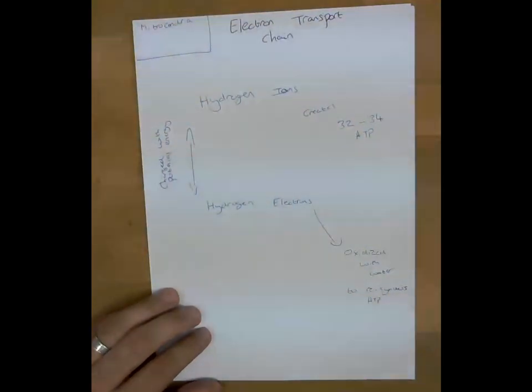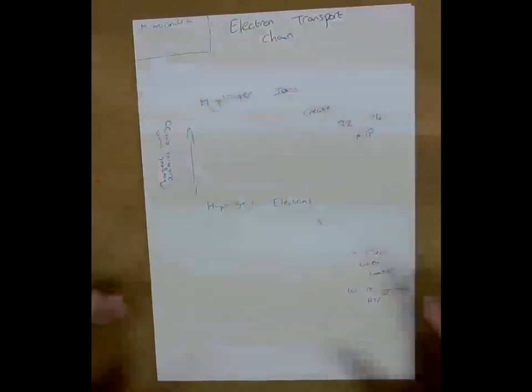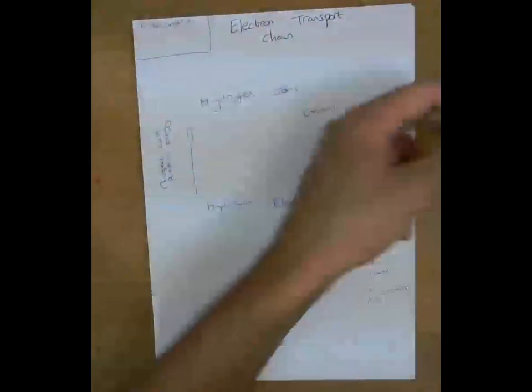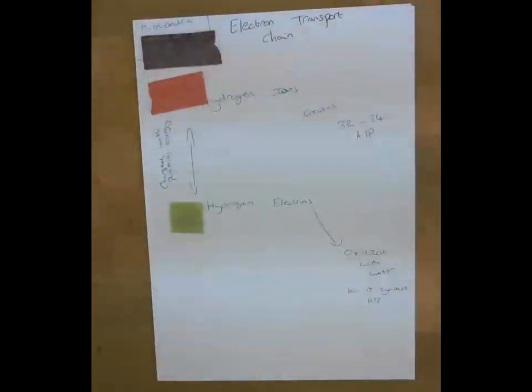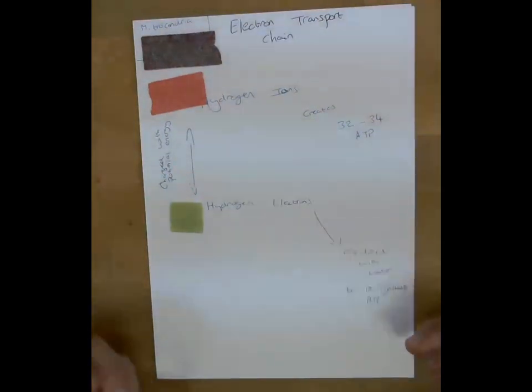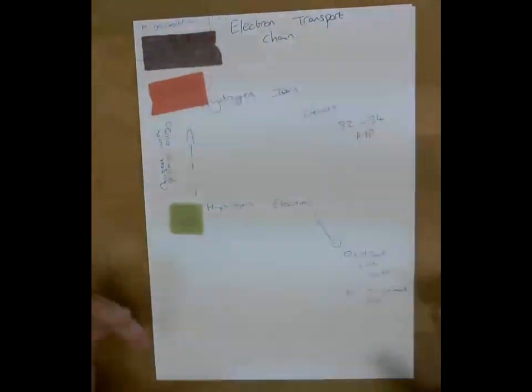When we get inside our electron transport chain, this happens within something called the cristae. This is a section of the mitochondria. And within this, our hydrogen, so our hydrogen gets carried by our hydrogen carriers, gets into this section here. Our hydrogen splits and becomes hydrogen ions and hydrogen electrons. And both of these are charged with potential energy.